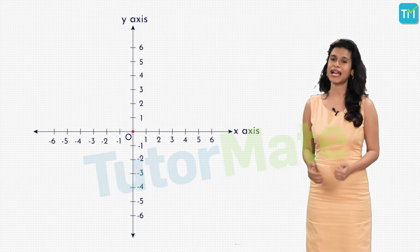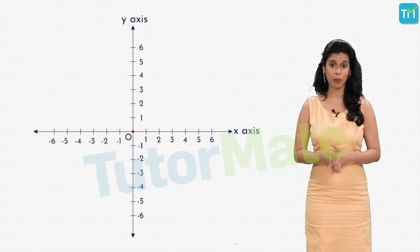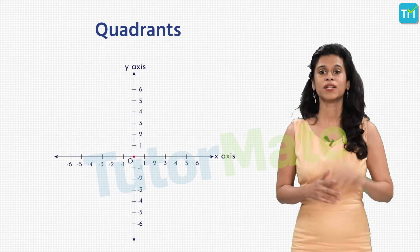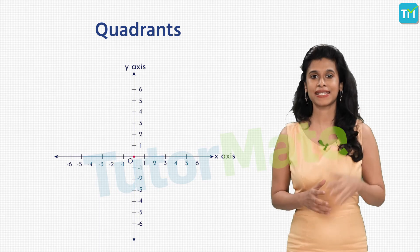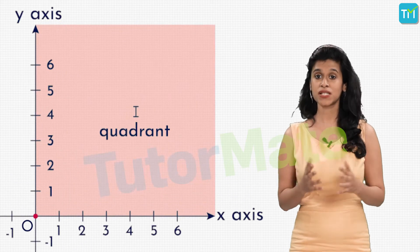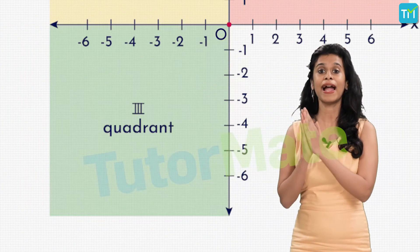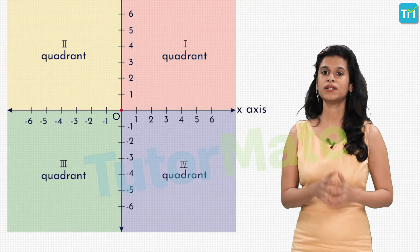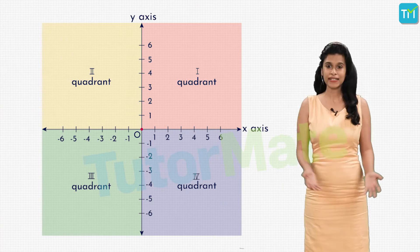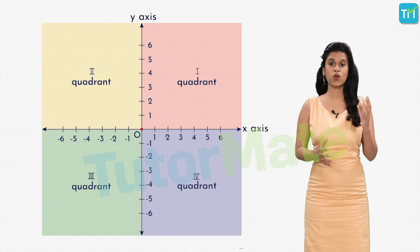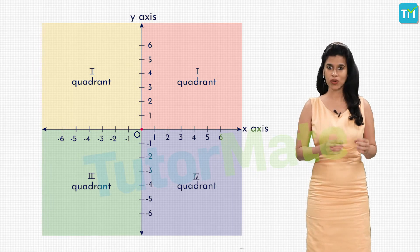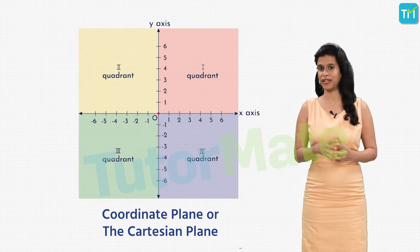We then saw how these axes divide the plane into four parts where these four parts are called quadrants. The quadrant between the positive x-axis and the positive y-axis is numbered as the first quadrant while the second, third, and fourth ones are numbered after it in the anti-clockwise direction. Finally, this plane consisting of the coordinate axis, the origin, and the four quadrants is known as the coordinate plane or the Cartesian plane.